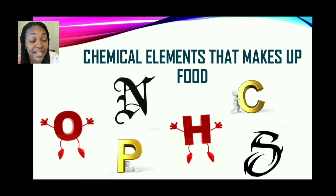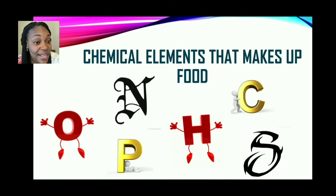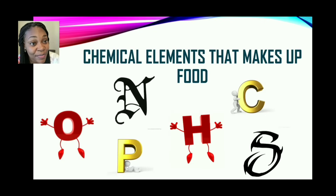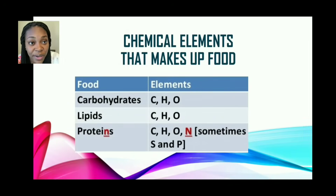Now let us look at the chemical elements that make up food. Based on these letters displayed, can you guess which chemical elements they stand for? We have O, N, P, H, C, and S. Which of these elements do you think make up certain nutrients? Let us see if you are thinking on the correct path.